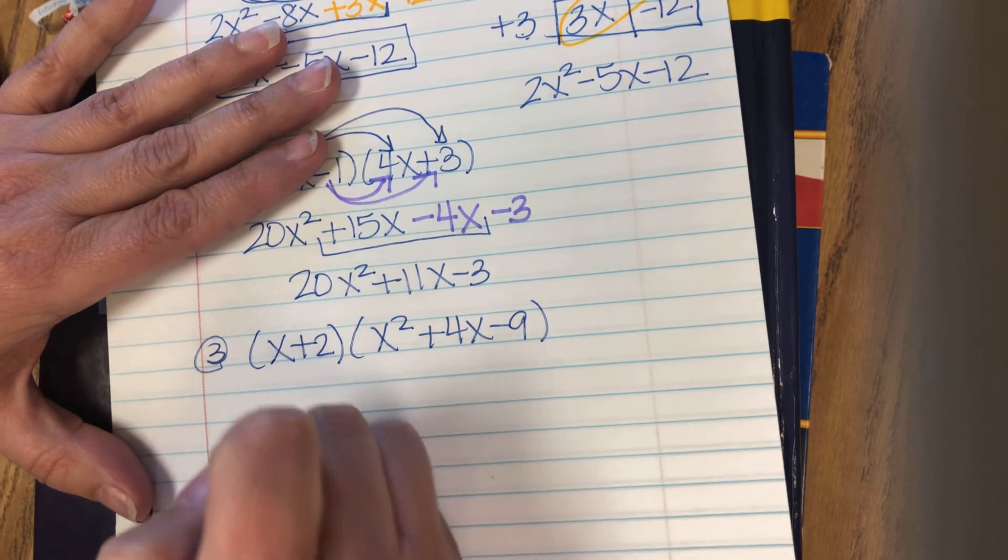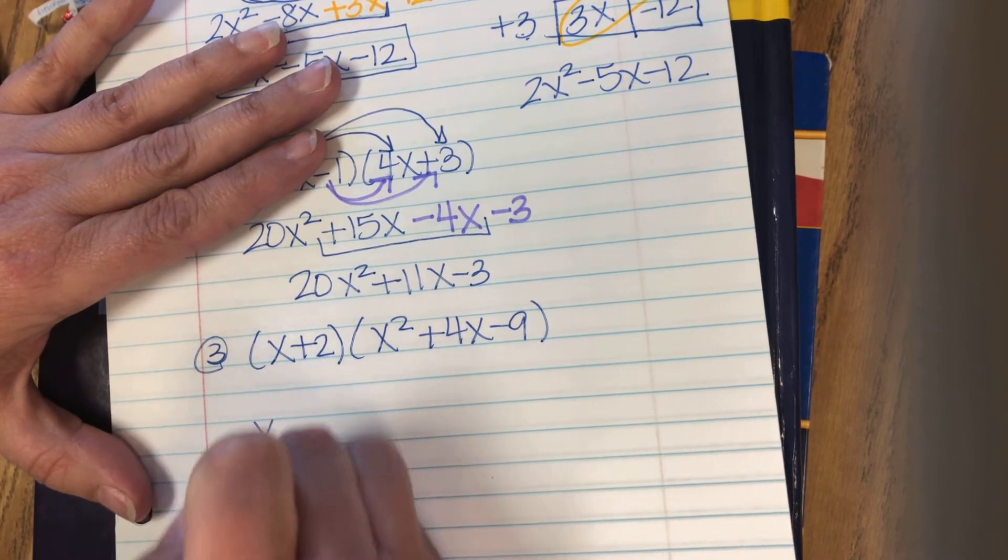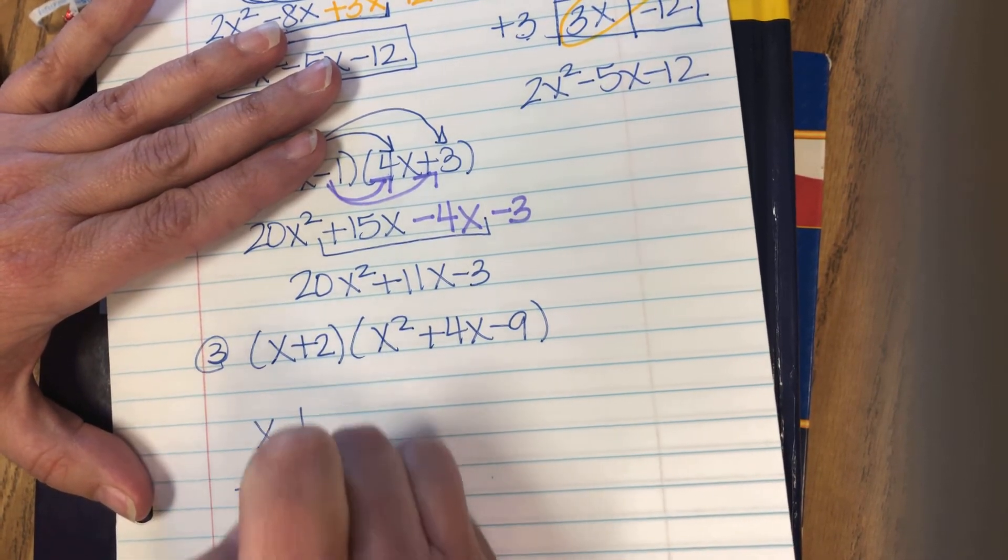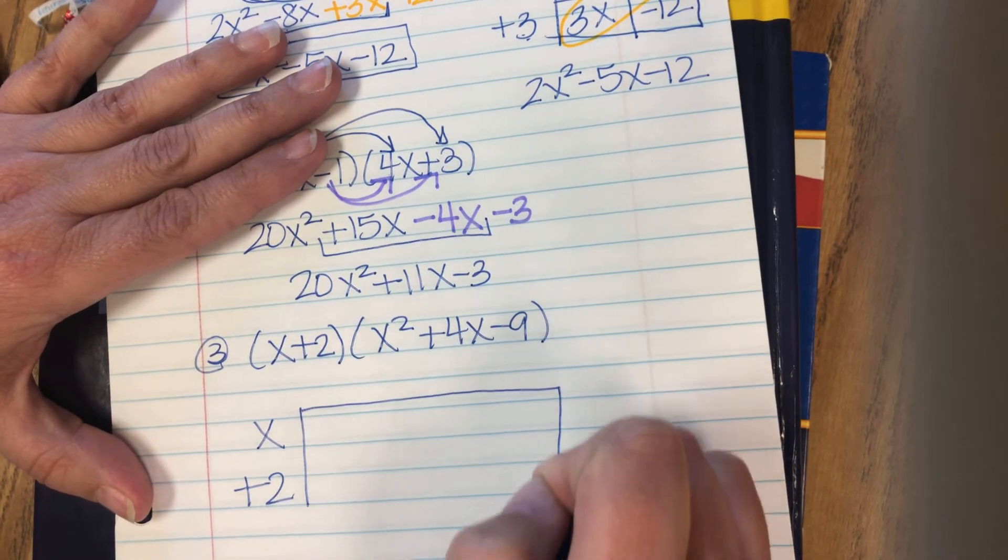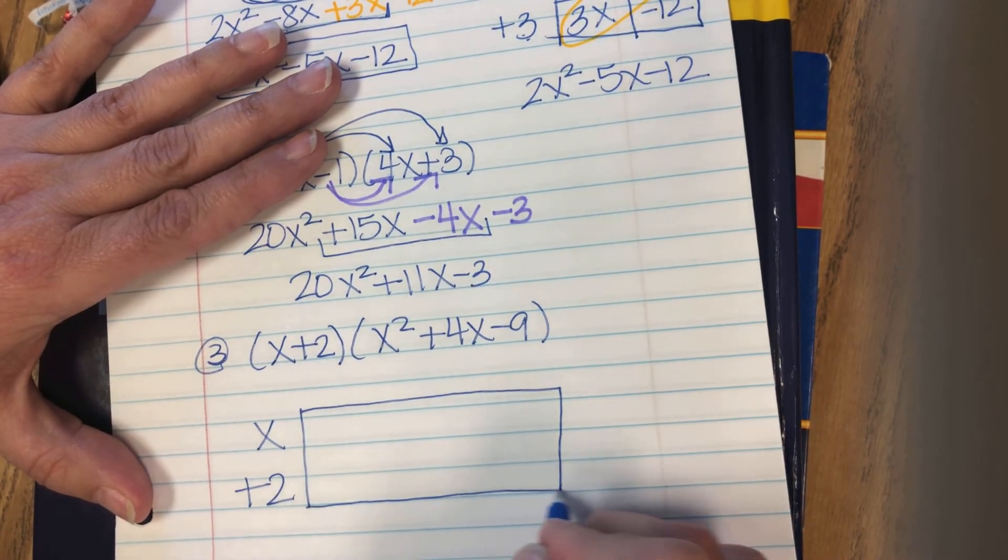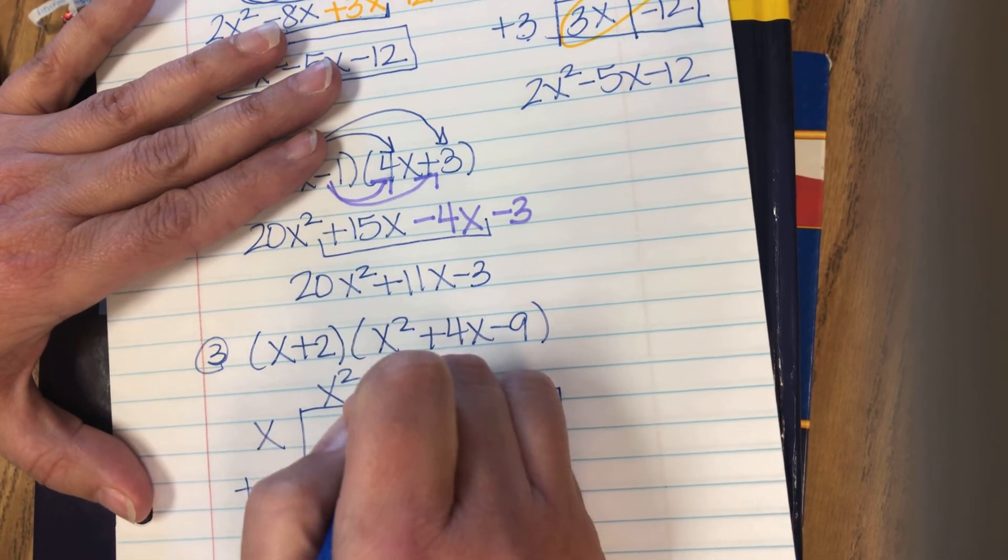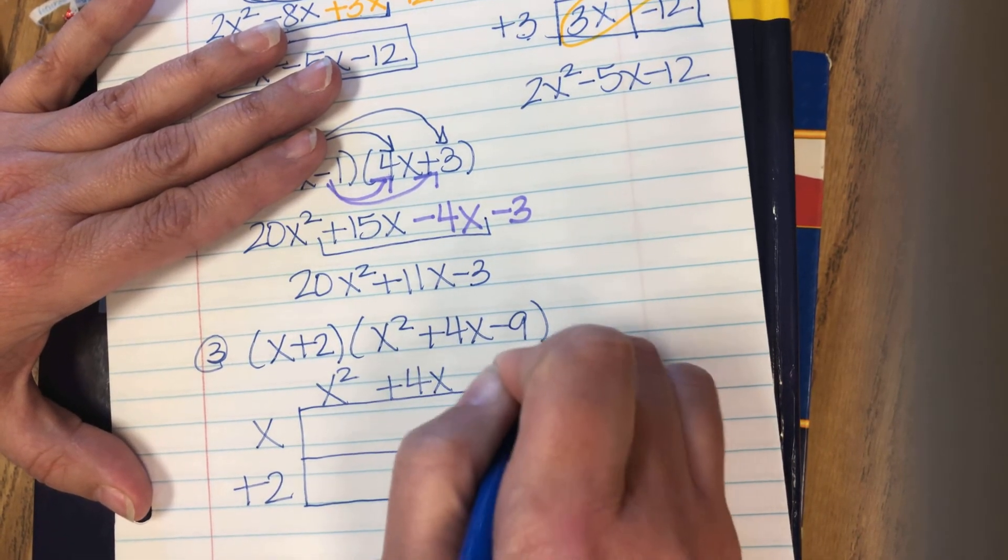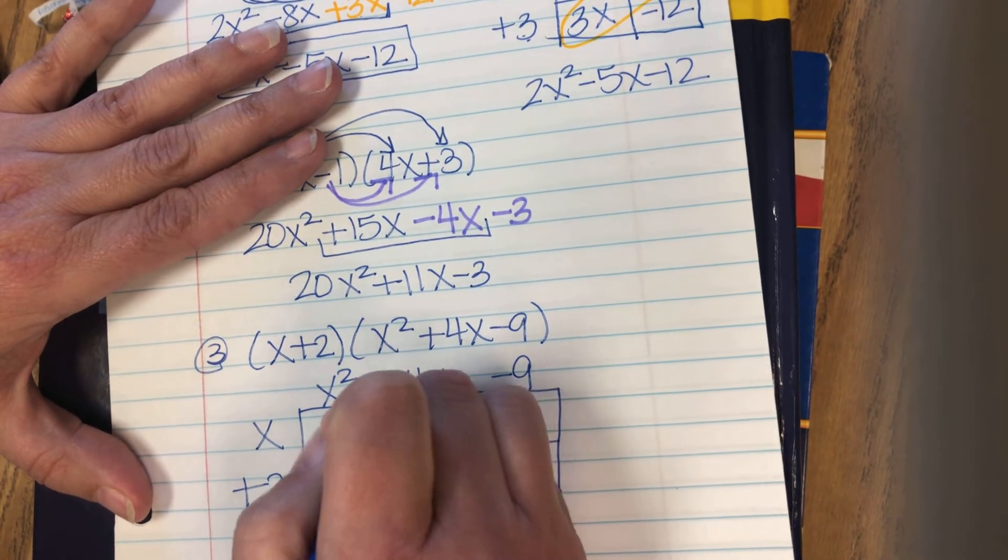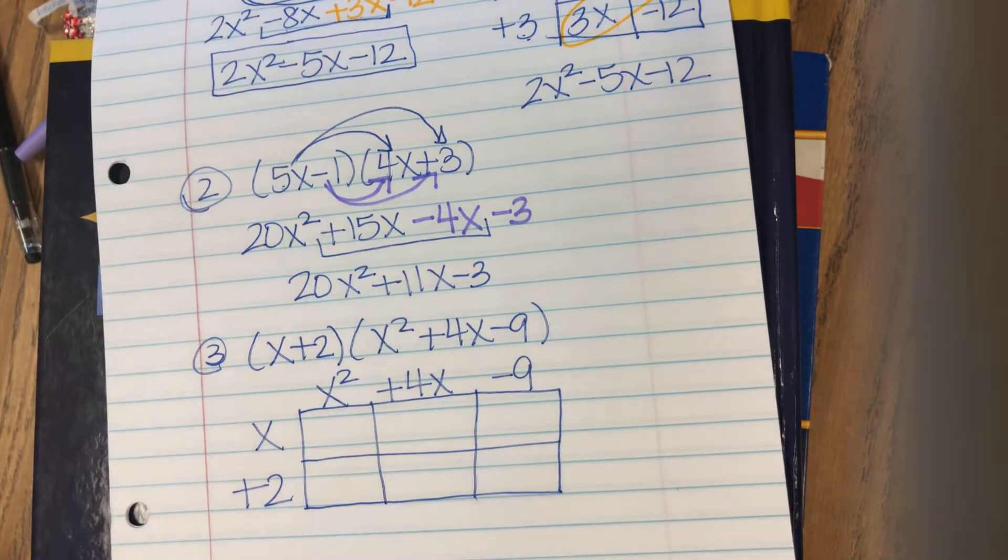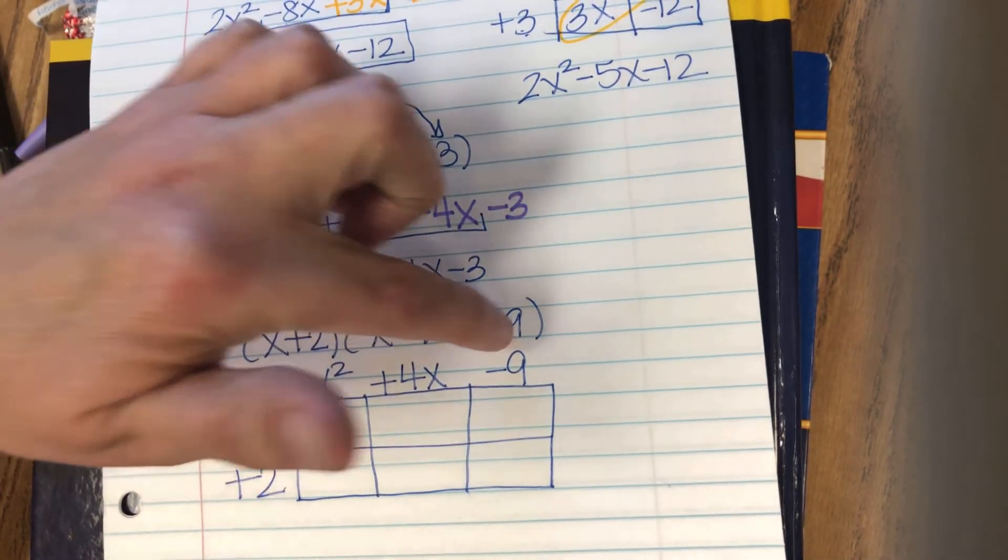I'm going to choose to do the box method for this one. So I'm going to put the x plus 2 along the side. And I'm going to put the x squared plus 4x minus 9 along the top. And I'm choosing the box on this one because of these three terms.